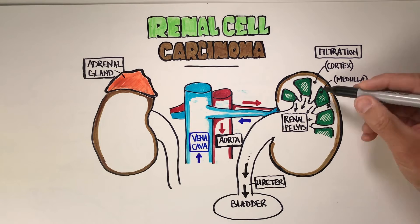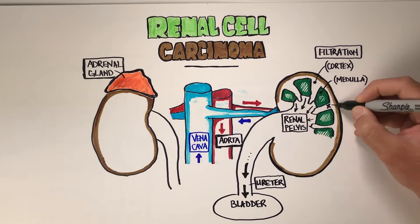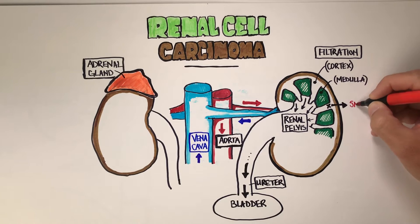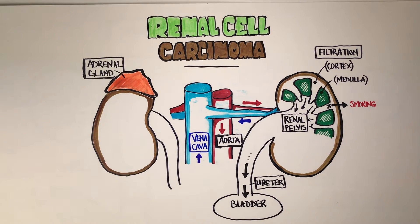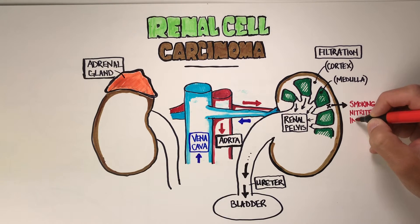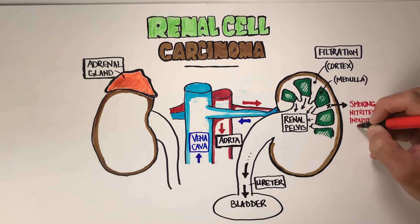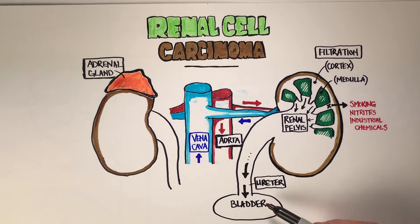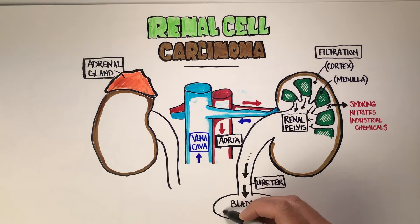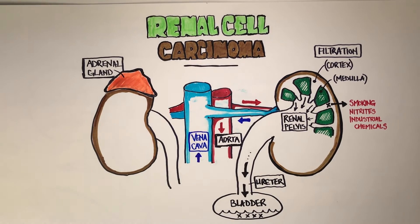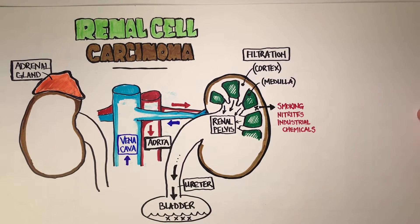We will get back to the adrenal gland when we address staging. Most renal cell carcinomas originate in the outer rim of the kidney — in the cortex and medulla, in the fine tubing of the filtration system. The known culprits to start these mutations are smoking, nitrites, and industrial chemicals. These don't remain long in the renal pelvis, but can accumulate in the bladder and are associated with bladder cancers as well.